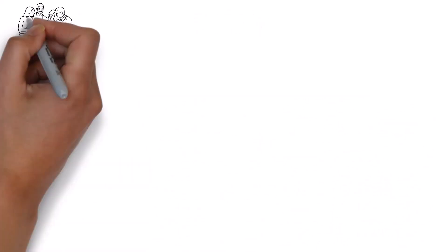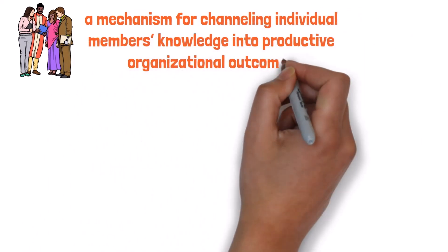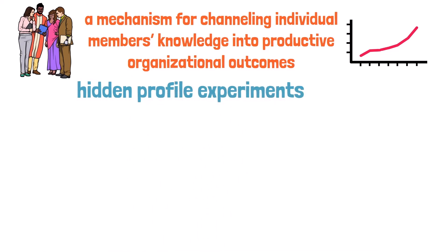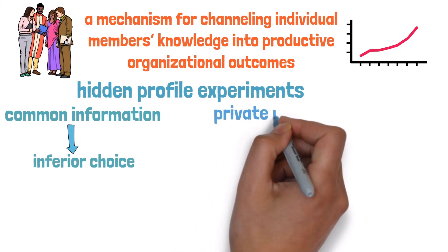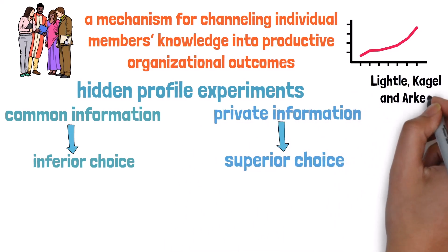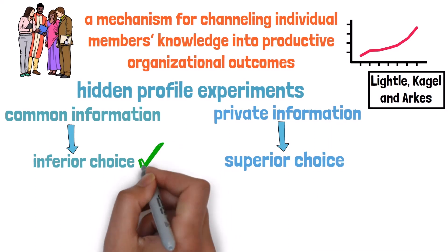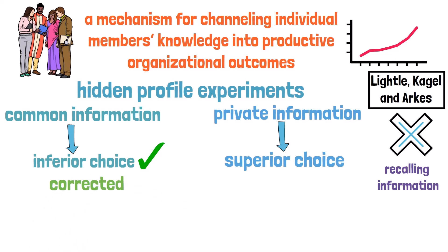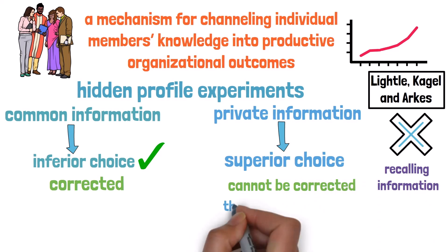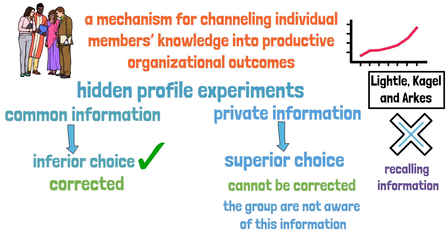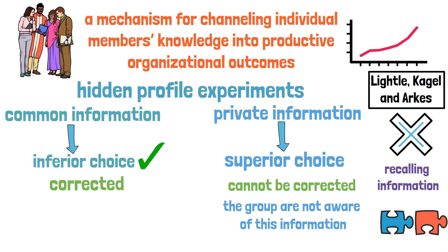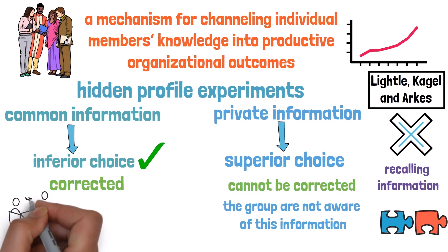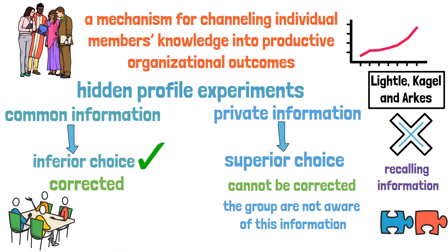Group decision-making provides a mechanism for channeling individual members' knowledge into productive organizational outcomes. However, in hidden profile experiments — where group members have common information favoring an inferior choice and private information favoring a superior choice — Lightle, Kagel, and Arkes found that groups typically choose the inferior alternative. Group failures primarily result from mistakes in recalling common information, which are typically corrected, whereas mistakes in recalling private information needed to uncover the hidden profile cannot be corrected, as the group is unaware of this information. The poor performance of groups therefore primarily results from the structure of the problem, rather than deficiencies in how groups share and process information, and these discussions also help explain why groups spend a disproportionate amount of time discussing common information.